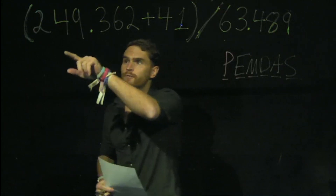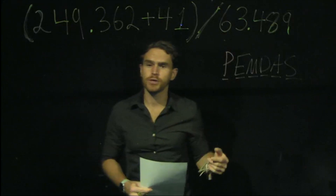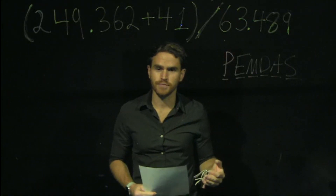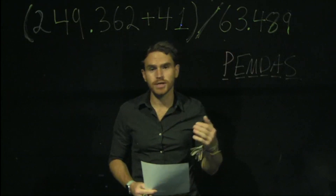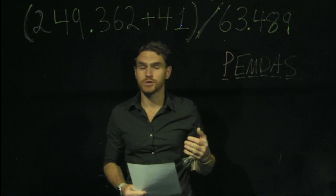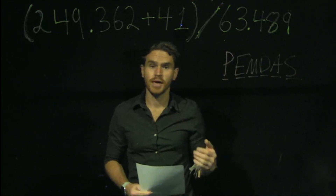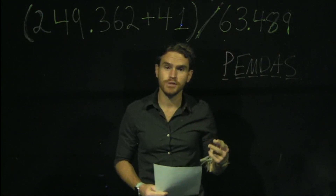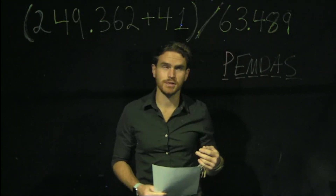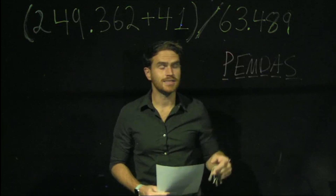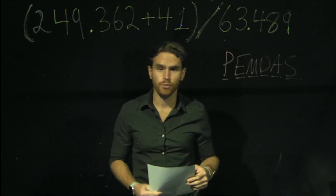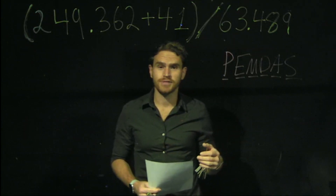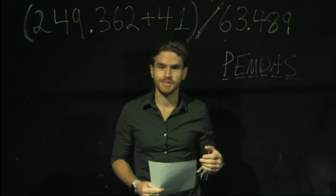In our first value, 249.362, all of those values are significant, so we're going to keep all of them for a total of 6. In 41, you only have 2 significant digits, and in 63.489, you have 5 significant digits.